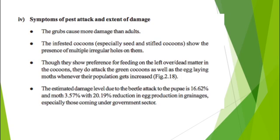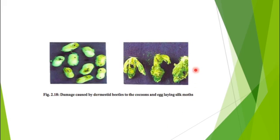Regarding symptoms of Dermestes beetle attack: larvae cause more damage than adults. The infested cocoons show the presence of multiple irregular holes on the body. Although they prefer feeding on leftover or dead matter in the cocoons, they do attack green cocoons as well as egg-laying moths when their population increases. This picture shows the symptoms of attack on both cocoons and adult egg-laying moths, with black scars visible on their bodies indicating Dermestes beetle infestation.